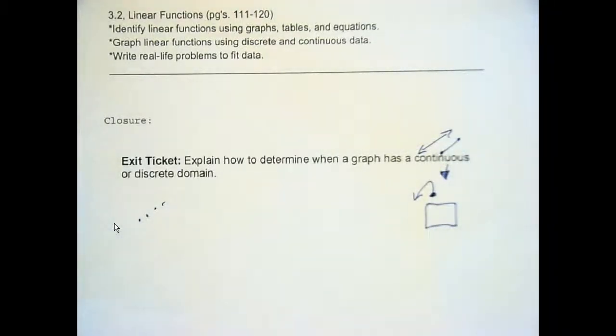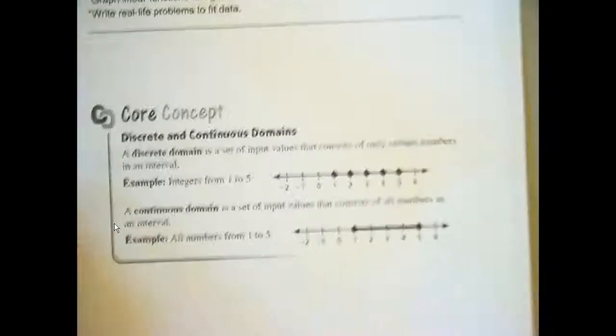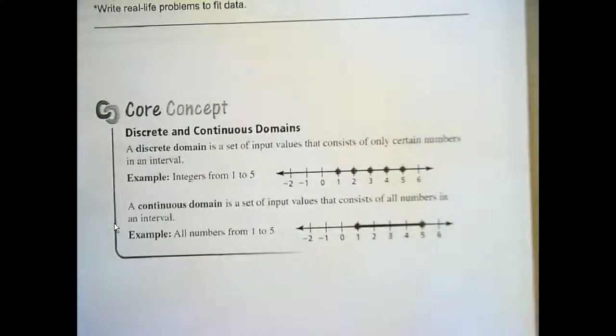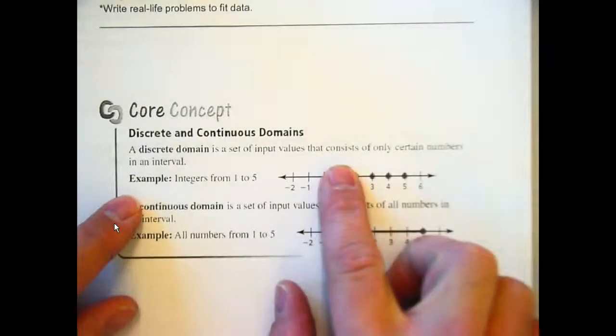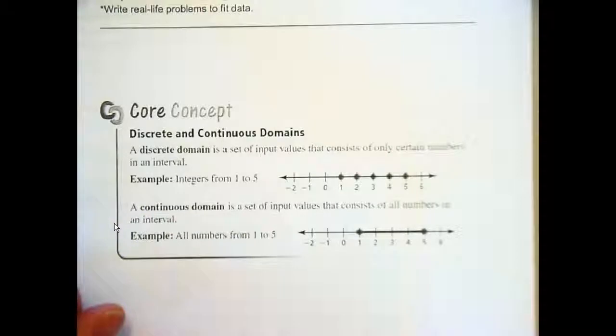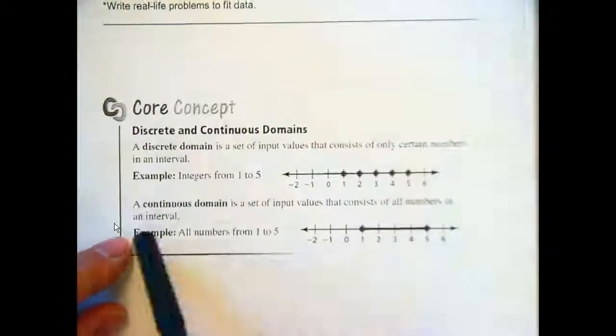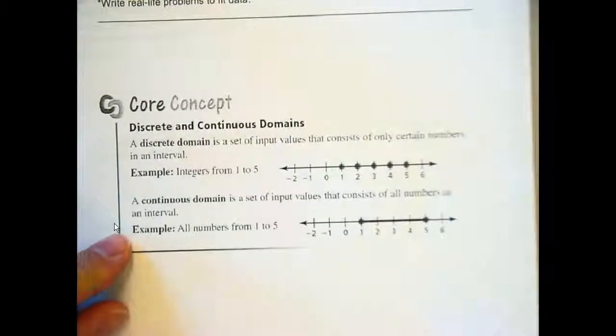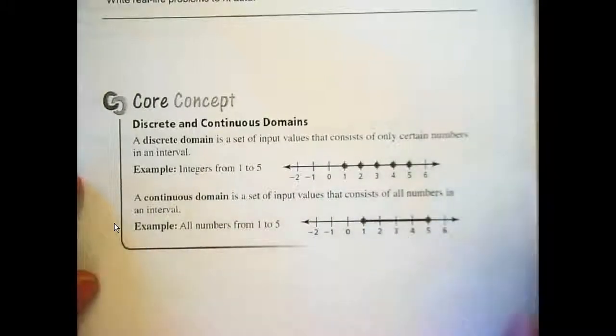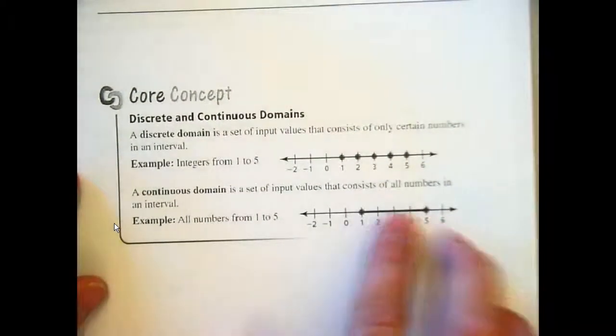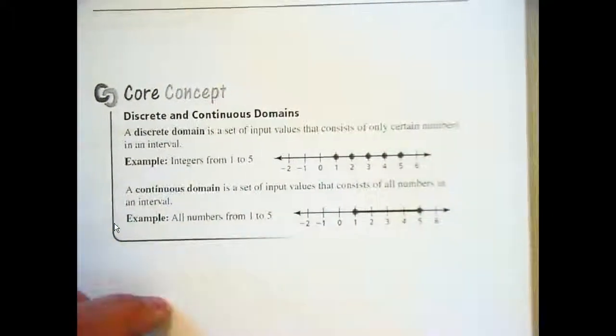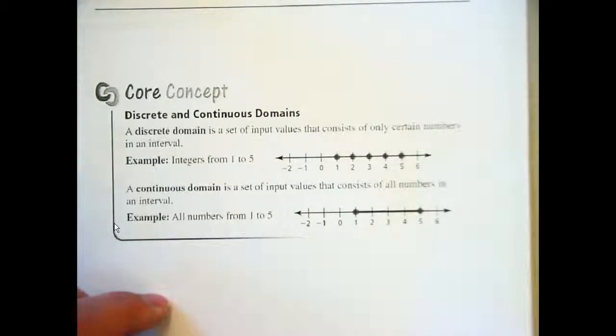Okay, that was a quick review of yesterday. So, again, if you kind of look at it this way, discrete data, set of inputs that only consists of certain numbers in an interval. Whereas, continuous input values that consist of all numbers within that interval. Between two points. So, you have the shaded area there, or the connected points.